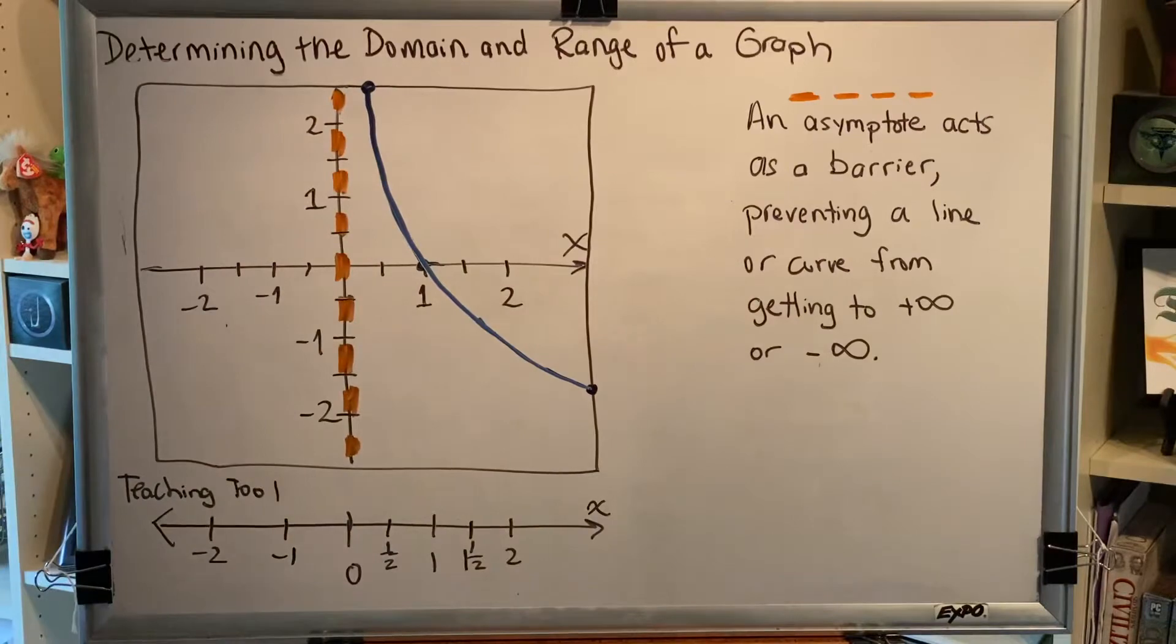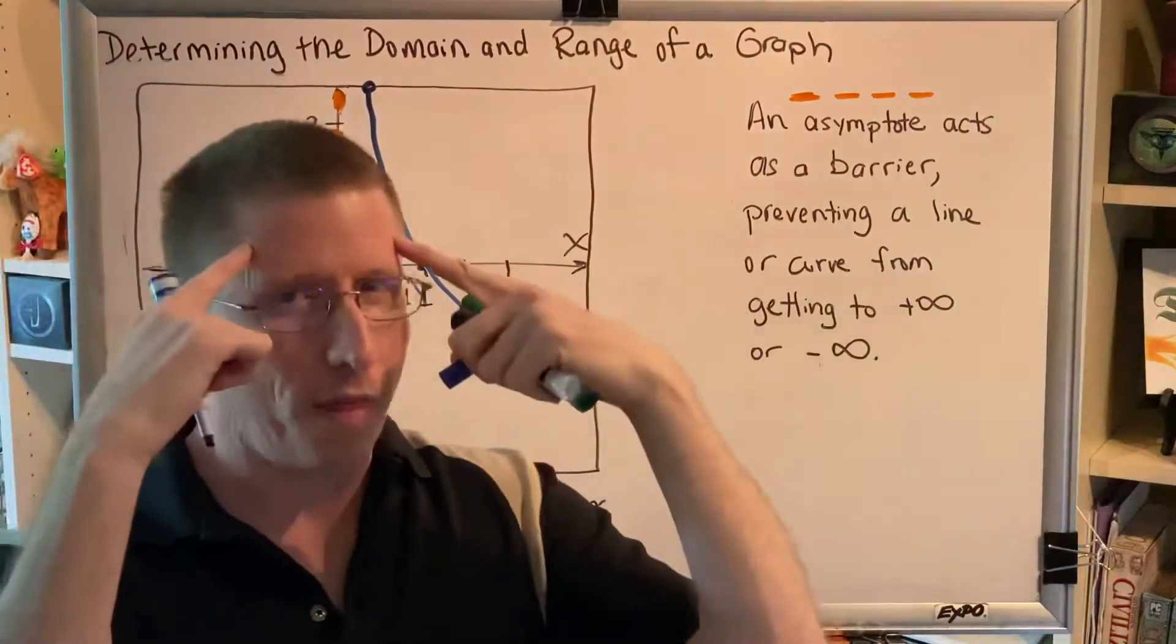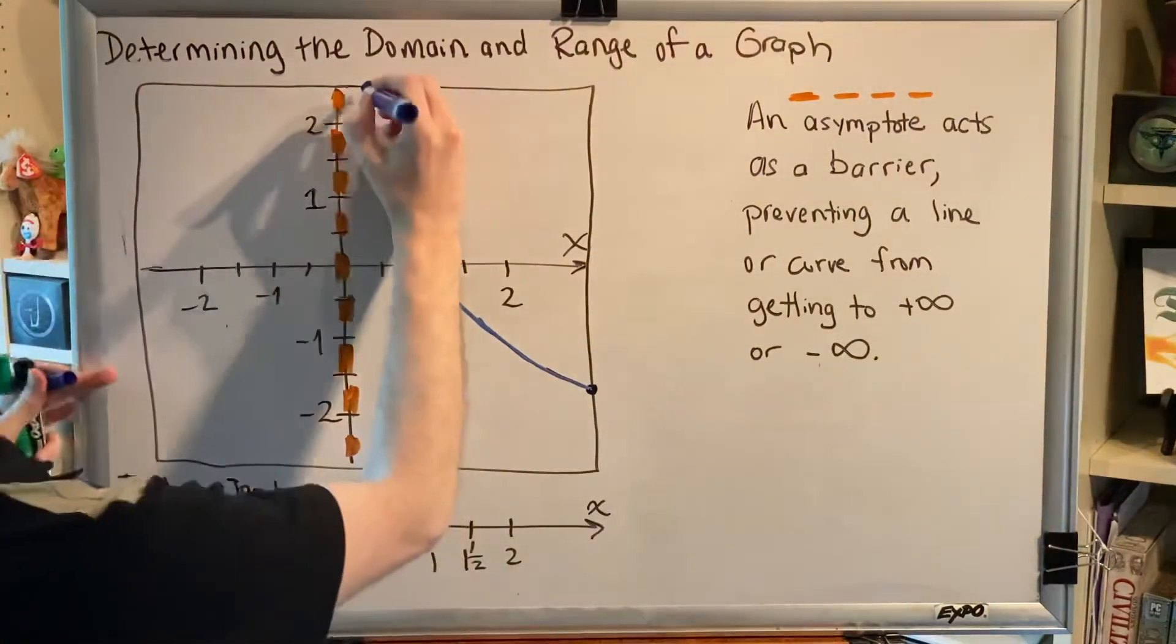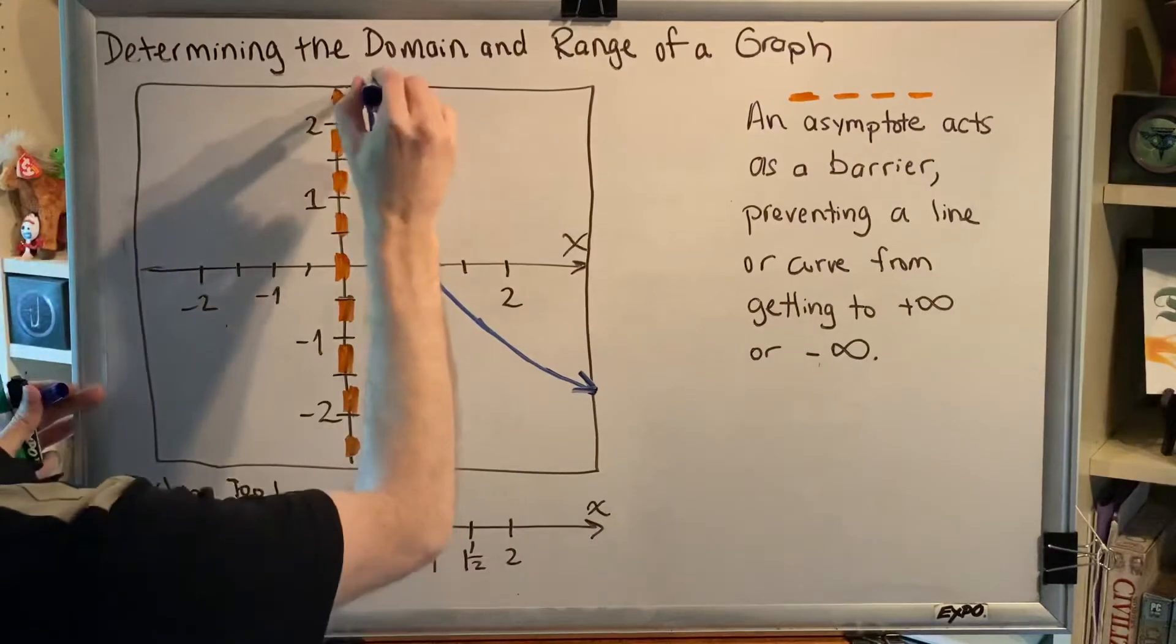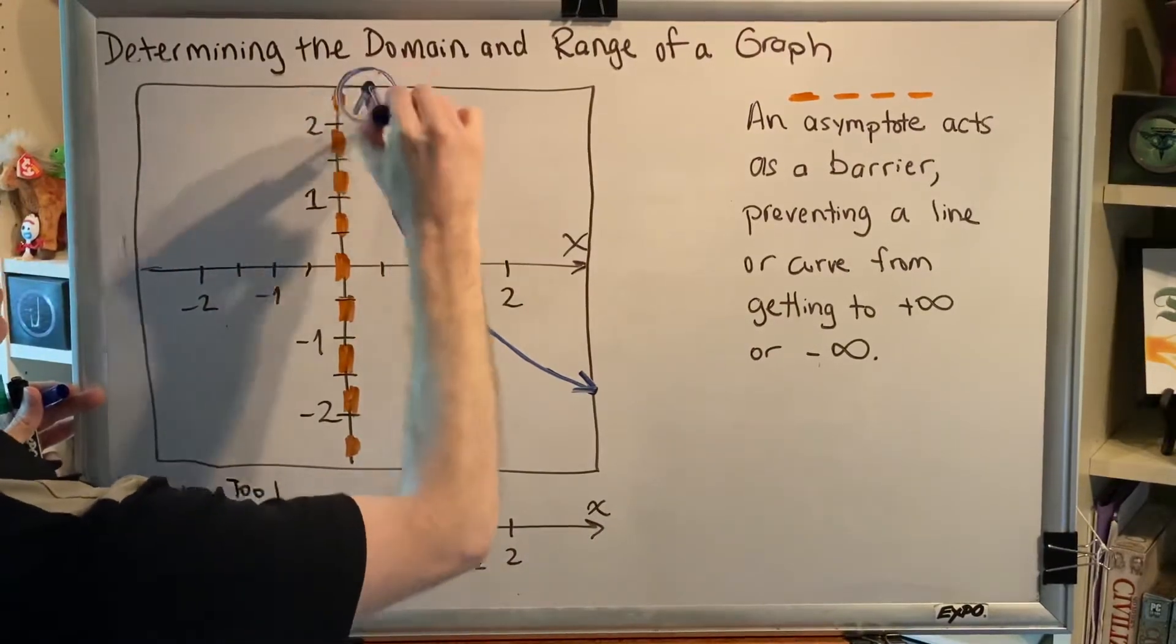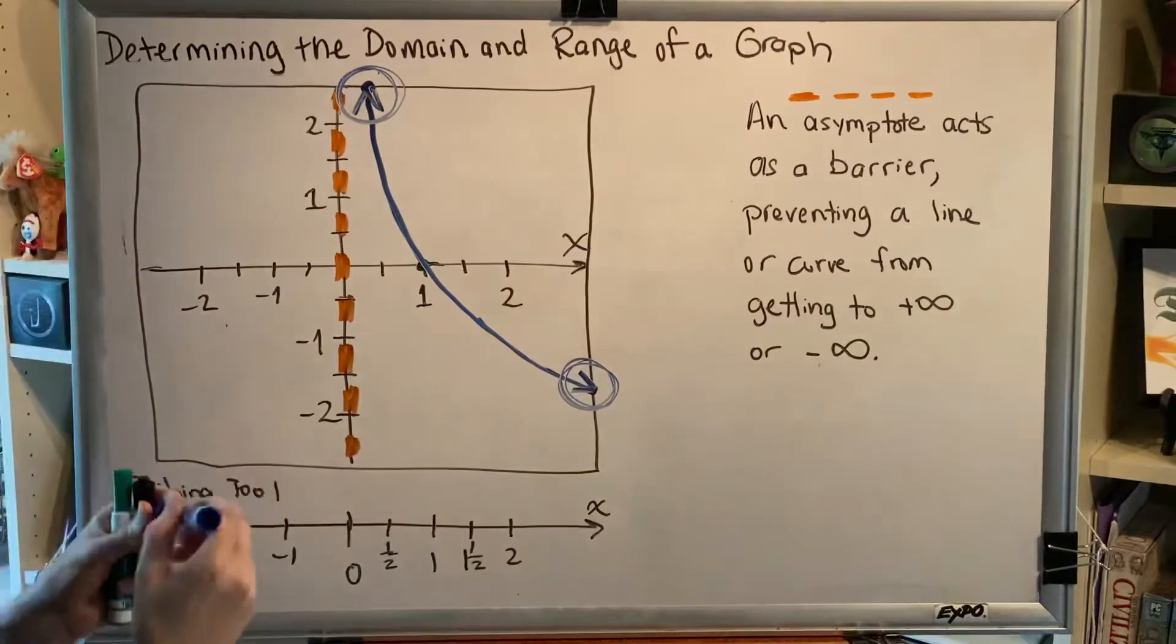We just need to figure out then what numbers should we use to represent these. We learned in a previous video that when a curve goes all the way to the outer edge, we are to assume that there is an arrow there. So there's an arrow here and there's an arrow here.